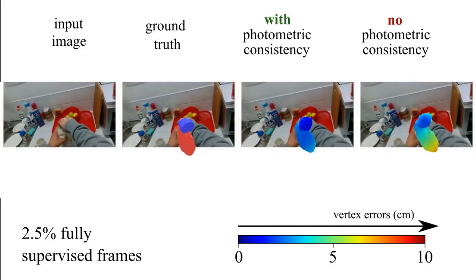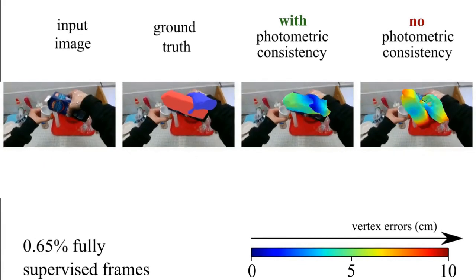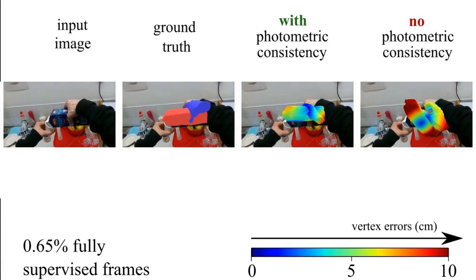Even when using less than 1% of annotated frames, we observe quantitative and qualitative improvement from fine-tuning with the photometric consistency loss.